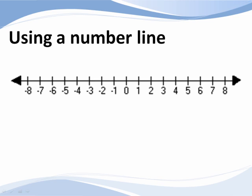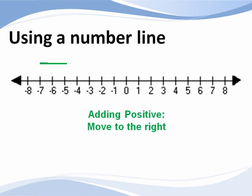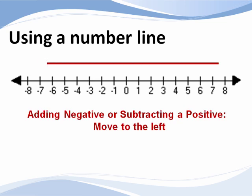There's another rule we are going to follow. Adding a positive number means moving to the right on a number line. On the other hand, adding a negative or subtracting a positive means moving to the left on a number line.